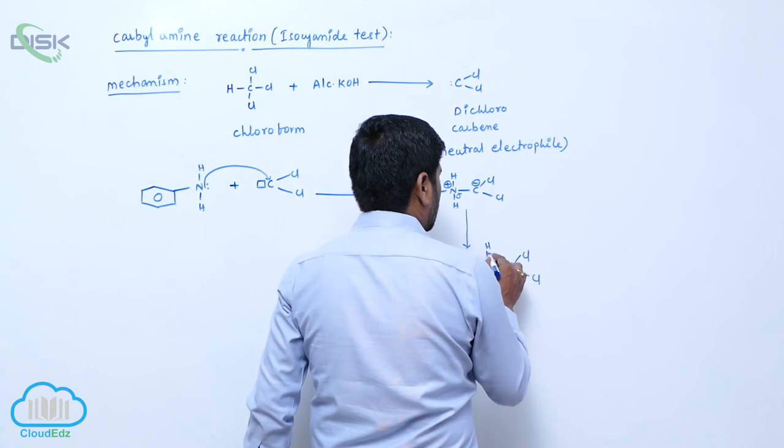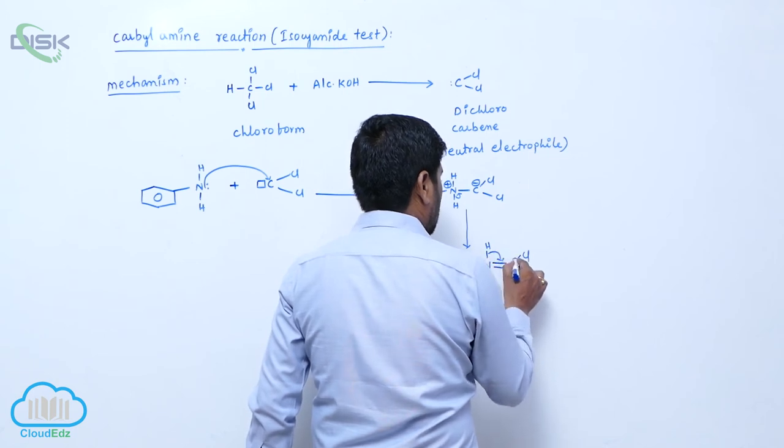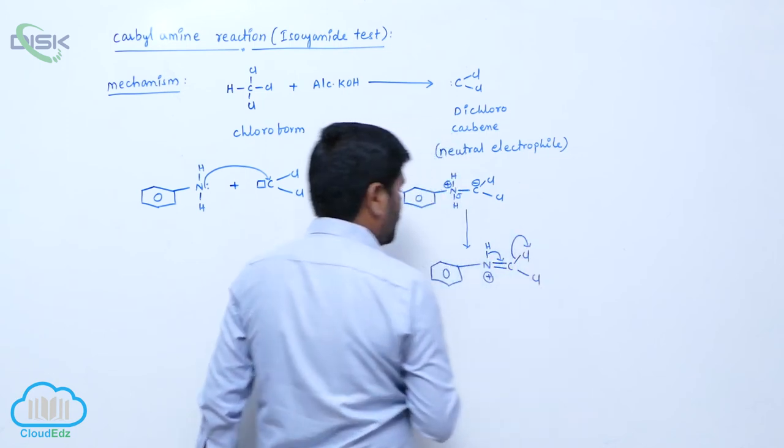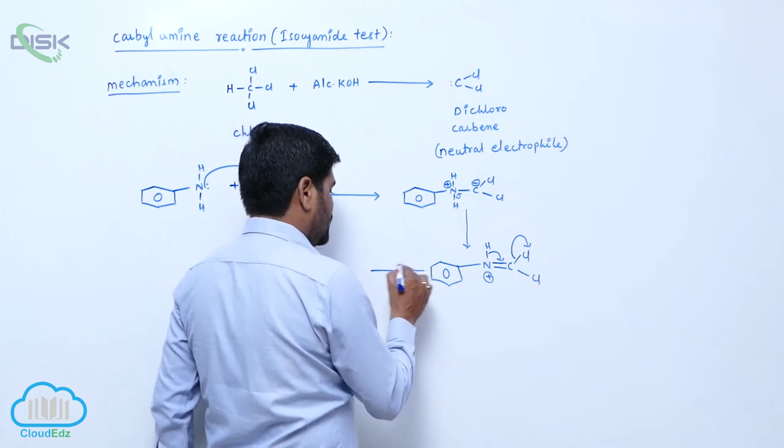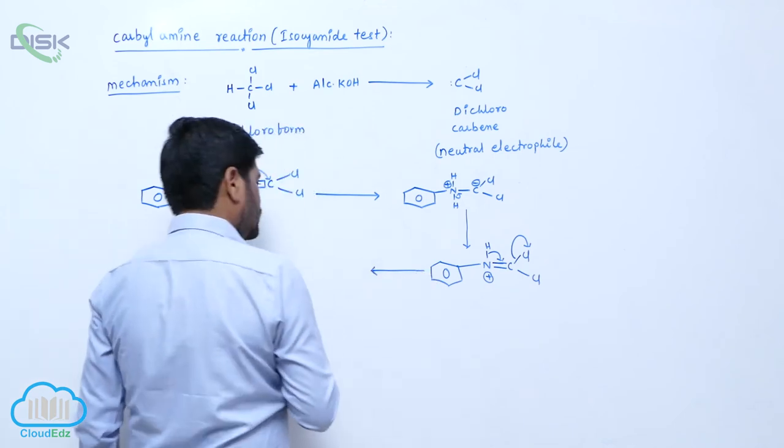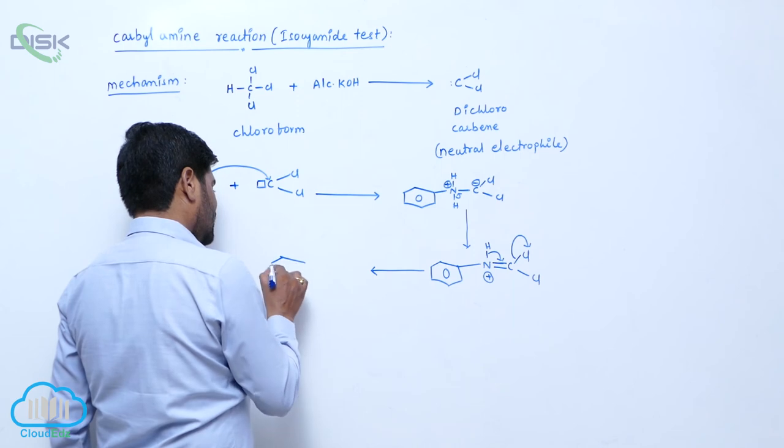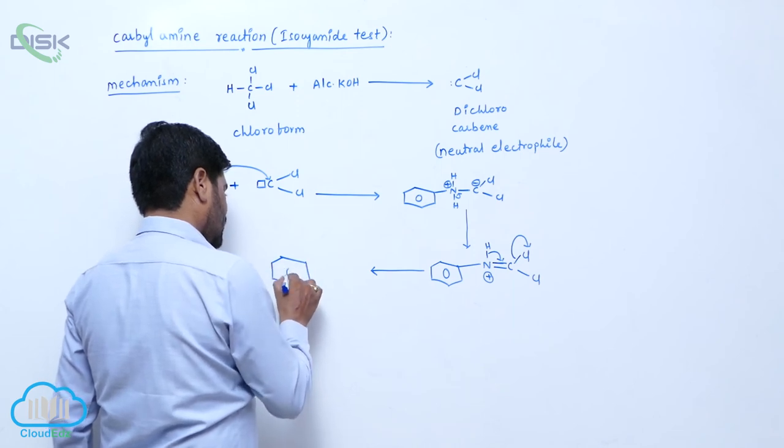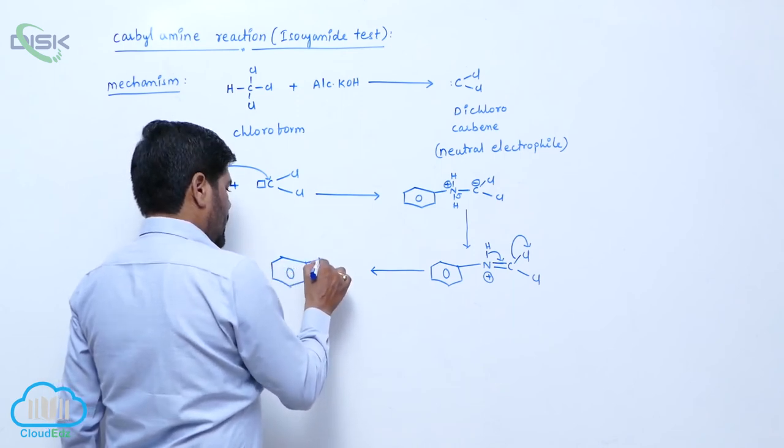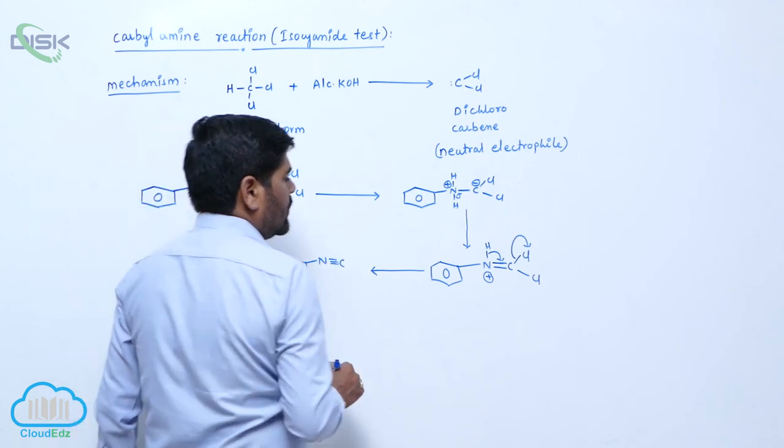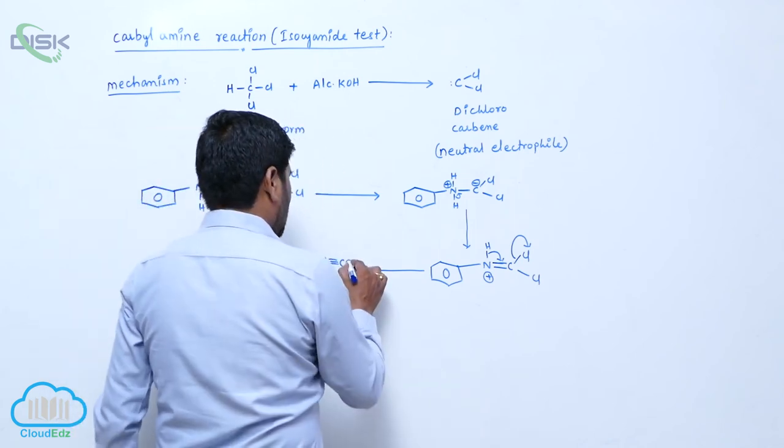Now, this nitrogen attaches here. This nitrogen attaches here, plus Cl takes place here. And triple bond N. Then here is what? Cl.